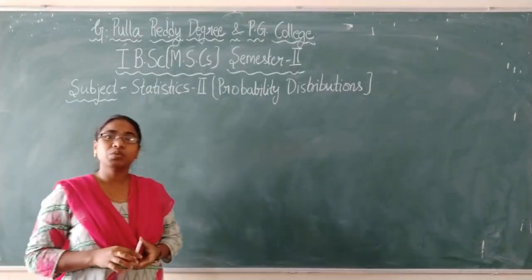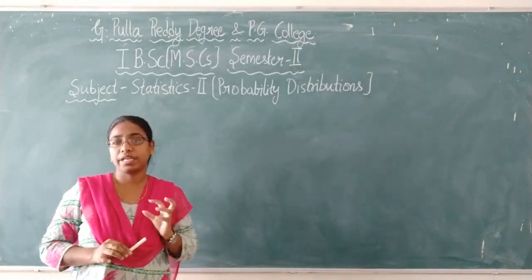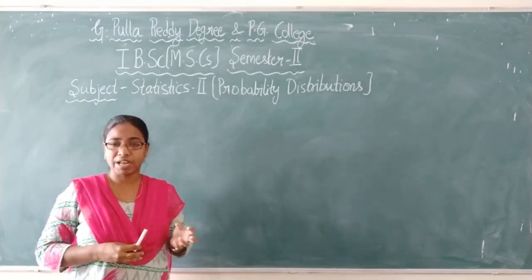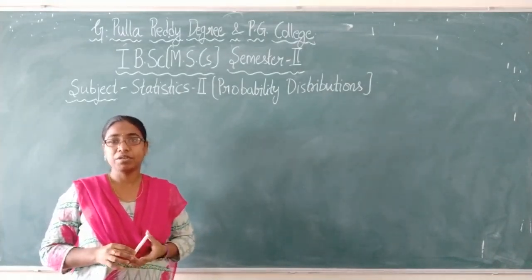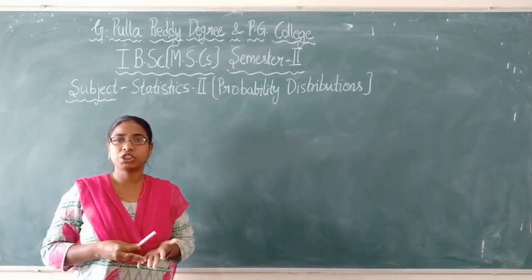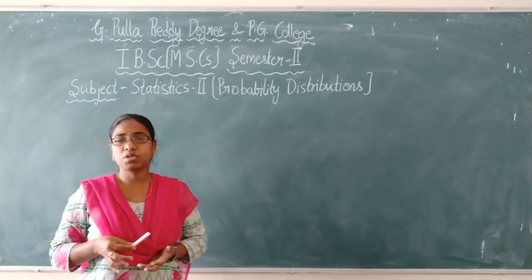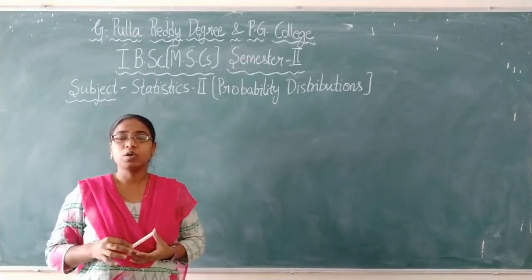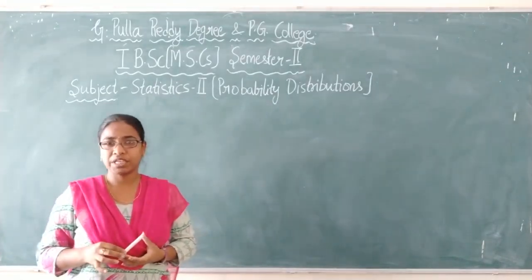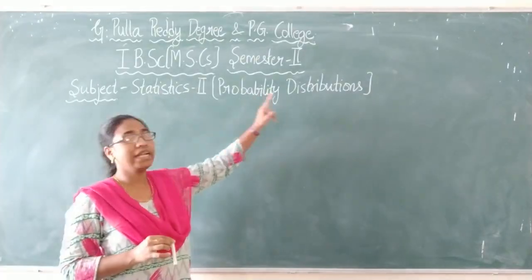In the first semester we learnt only about descriptive statistics and probability — how your population is described, how your data is described, central tendency, dispersion, variation in data, and the central part of observations. We also studied averages like moments, mathematical expectations, and probability.